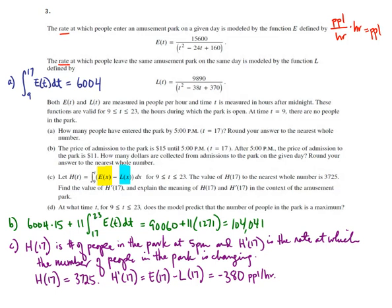All right, so part D. At what time t from 9 to 23 does the model predict that the number of people in the park is a maximum? Remember, the number of people in the park is not just the number of people who are entering. It's the number entering. It's the rate.